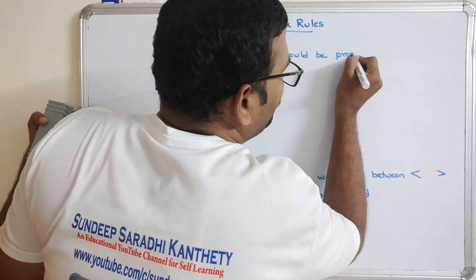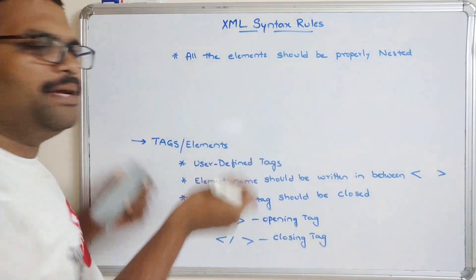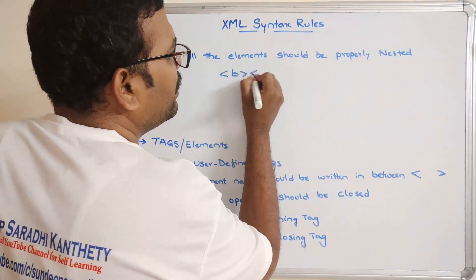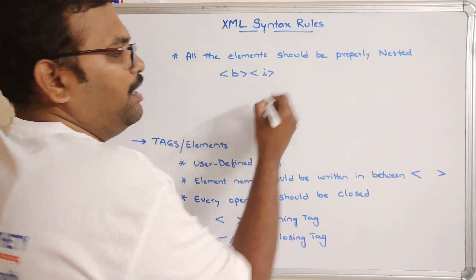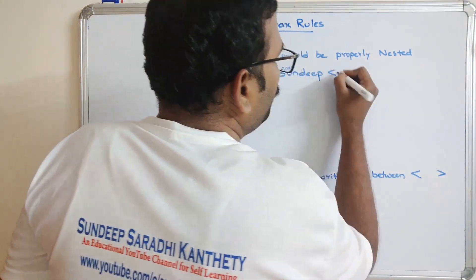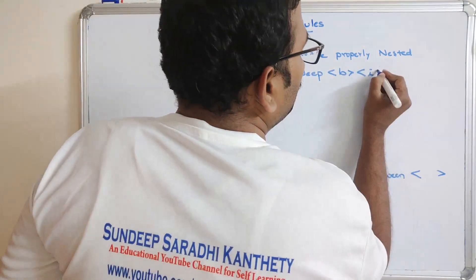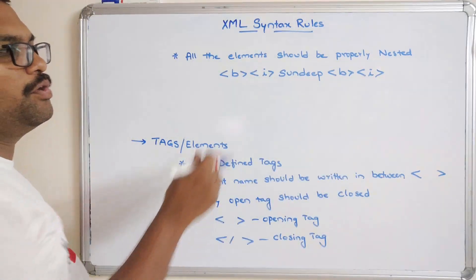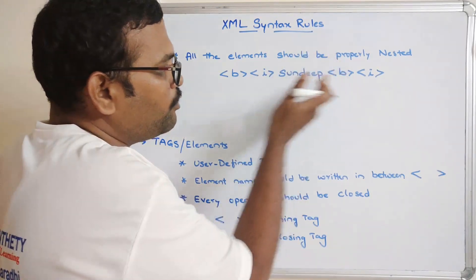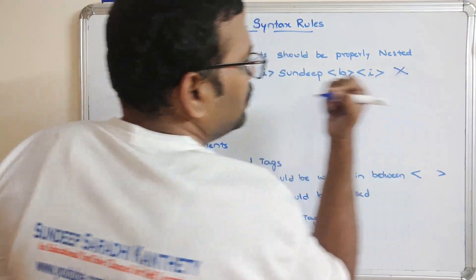What is meant by properly nested? For example, if I want to insert bold and italic formatting around my name, I should not write it incorrectly. This is not properly nested — because inside the bold tag we are writing the italic tag, and we must close the italic tag first before closing the bold tag. Writing it the other way is wrong.